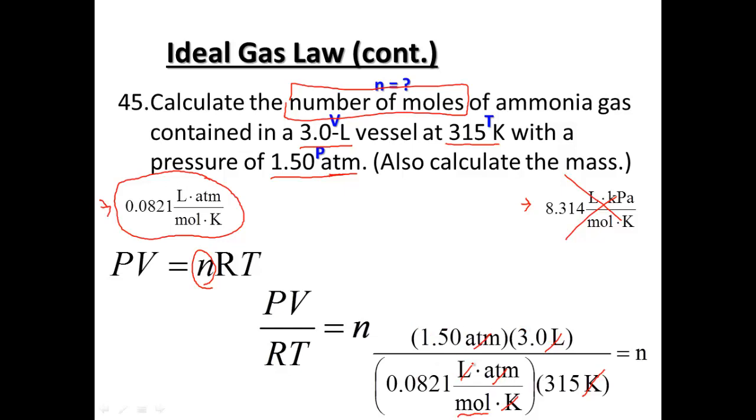Numbers on top multiplied, numbers on bottom are divided. And it turns out about 0.17 moles of ammonia gas could be found.